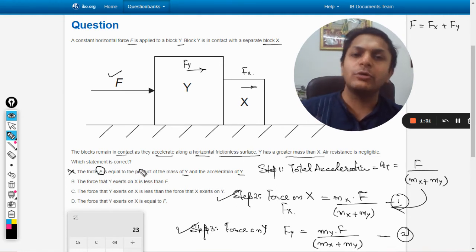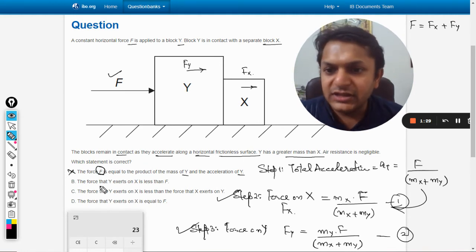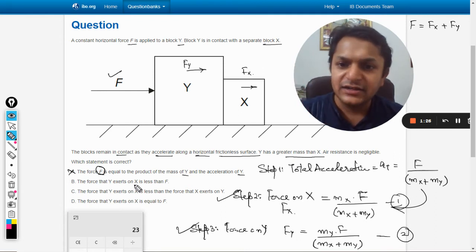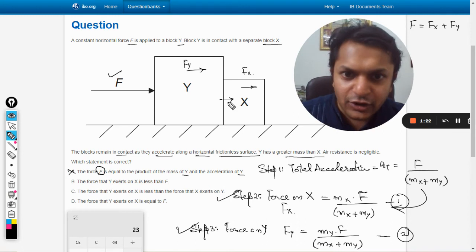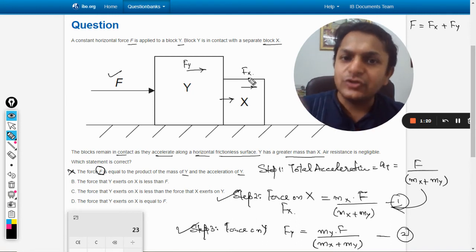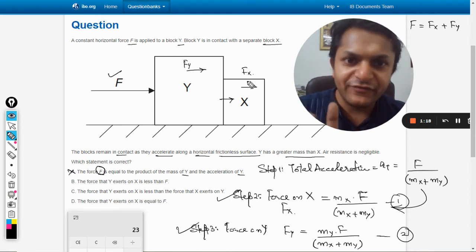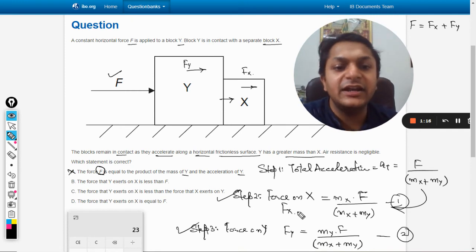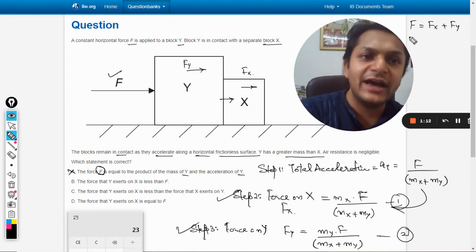The option is talking about the total force. Option B: the force that Y exerts on X is less than F. So the force that Y is exerting on X is actually equal to F of X, F_x. So I can say that it will definitely be lesser than F. There is no doubt about it because F is equal to F_x plus F_y.